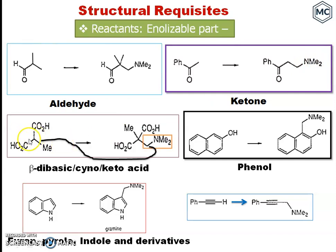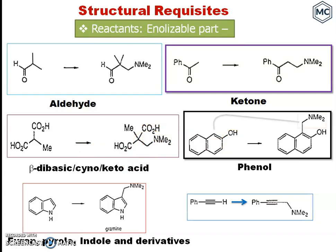Next, a beta-dibasic acid — or you can use either a cyanide or keto acid. Here, the ionizable carbon can react with the iminium salt and form a structure like this. The next example is phenol, which behaves like an enol, and this can react with the iminium salt to form a product like this.